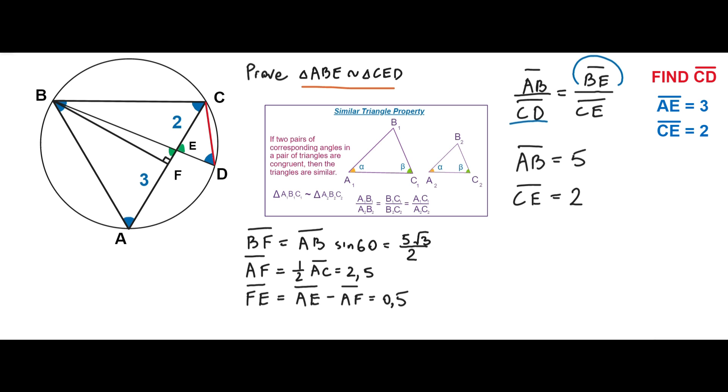In the triangle ABF, the segment BF is equal to segment AB times sine 60 degrees, equal to 5 square root 3 divided by 2. The segment AF is equal to segment AC divided by 2, equal to 2.5. And the segment FE is equal to segment AE minus segment AF, equal to 0.5.